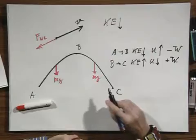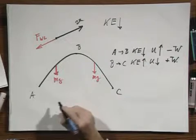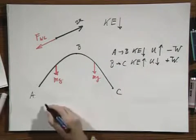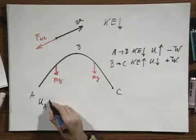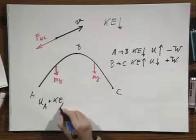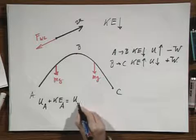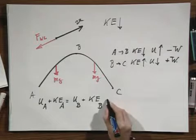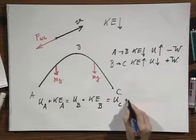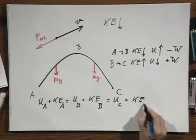In this case, unlike in the case when I did the negative work pulling onto the dog, when energy was converted to heat, in this case we have the conservation of what we call mechanical energy. The potential energy at A plus the kinetic energy at A equals the potential energy at B plus the kinetic energy at B, and it also equals the potential energy at C plus the kinetic energy at C.